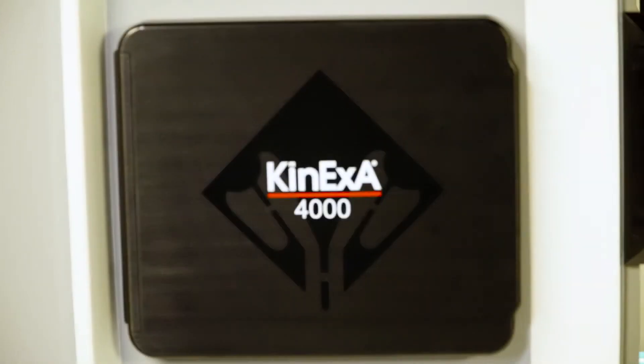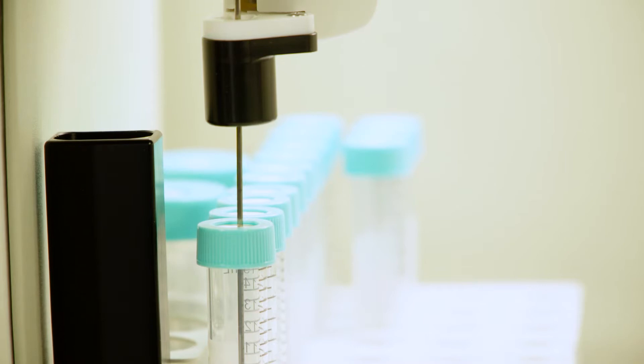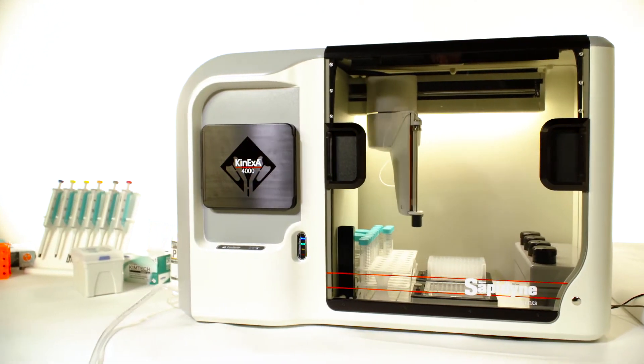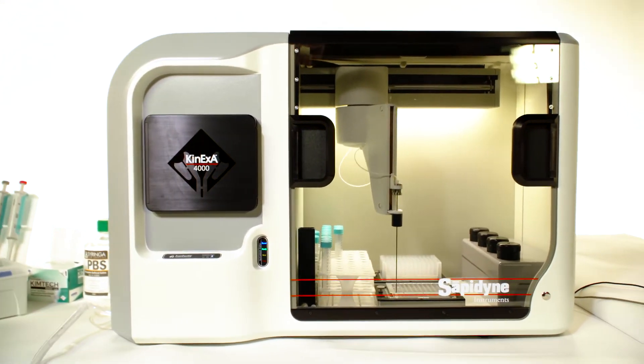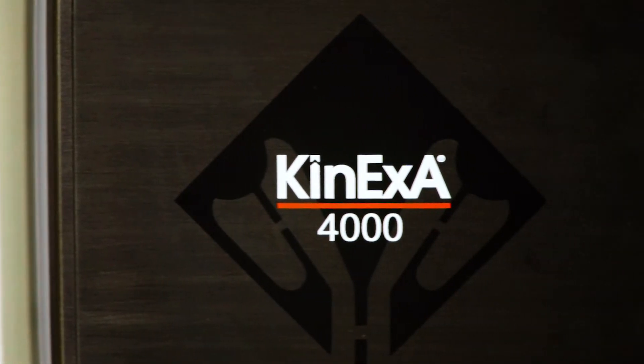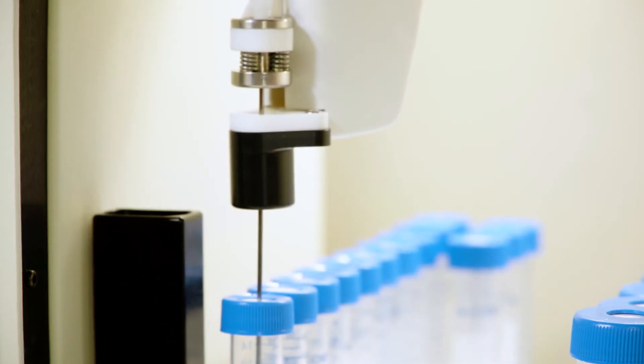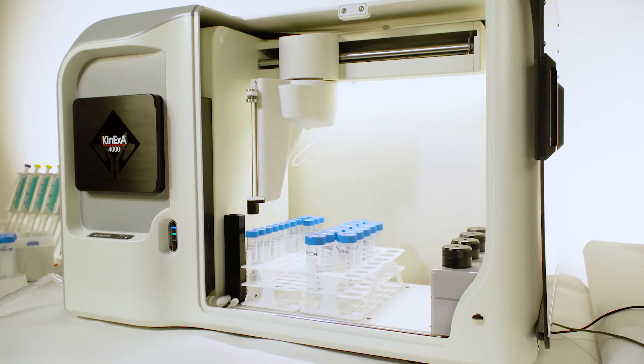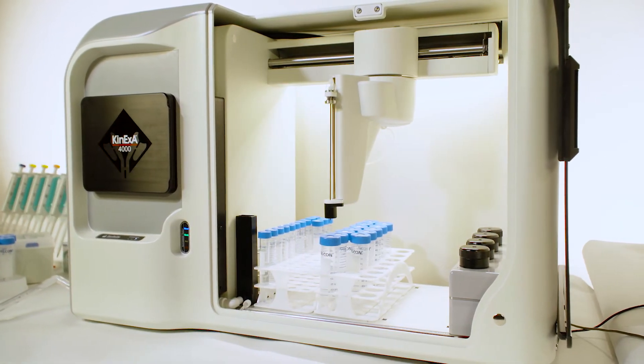The method for determining true equilibrium binding affinities in solution starts with a simple titration. One of the binding partners is kept constant while the other partner is titrated across a series of samples. Next, the samples are left to equilibrate.